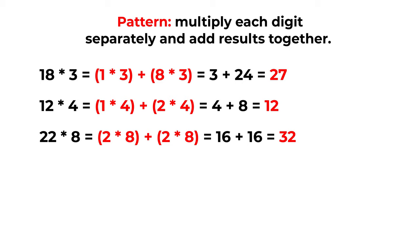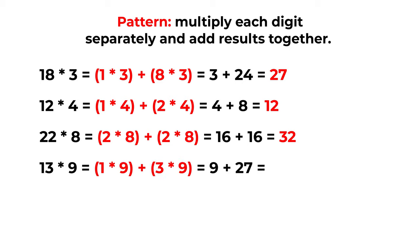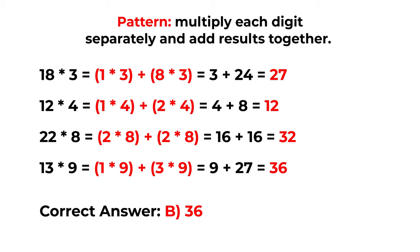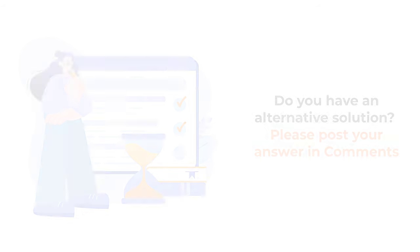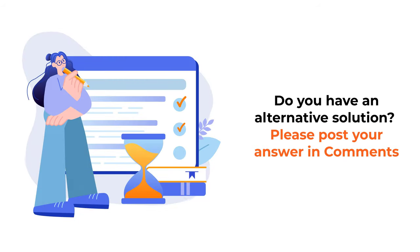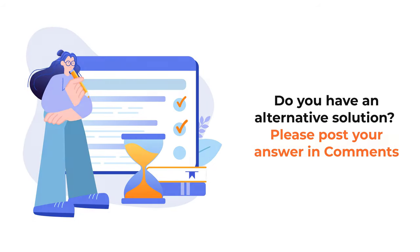So to calculate the answer for 13 multiplied by 9, we multiply (1 by 9) and add (3 by 9), which is the sum of 9 and 27, giving an end result of 36. The correct answer is choice B, 36. Hopefully you've nailed this question and now know how to answer similar problems on the test.